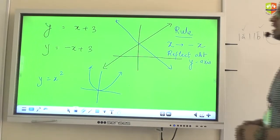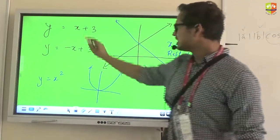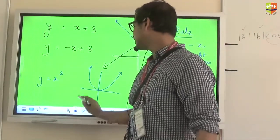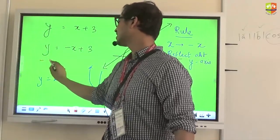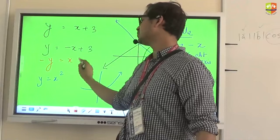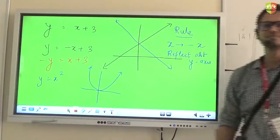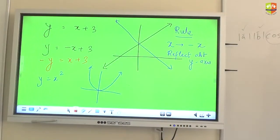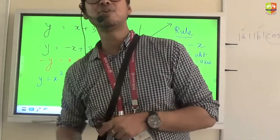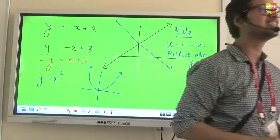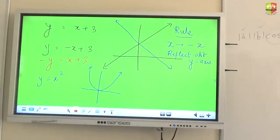Now, instead of changing the sign of x over here, if I would have changed the sign of Y, what will happen? Common sense is that, changing the sign of x reflects the graph about Y axis, so changing the sign of Y should reflect it about X axis.